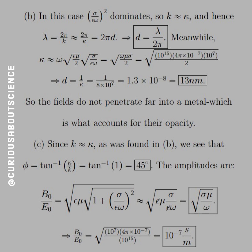kappa is approximately omega times square root epsilon mu over 2 times square root of sigma over epsilon omega. So, we get a lot of cancellations once we push in the omega, make it a square, the epsilon's cancel, the factor of omega's cancel. And we're left with omega mu sigma over 2.